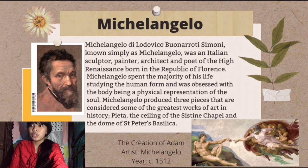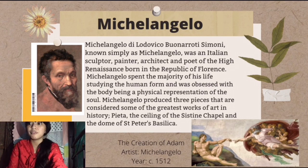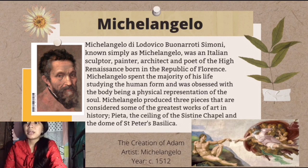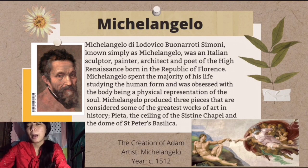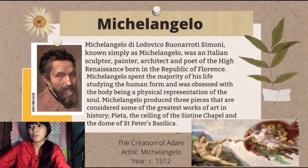Michelangelo's full name is Michelangelo di Lodovico Buonarroti Simoni. He was an Italian sculptor, painter, architect, and poet of the High Renaissance, born in the Republic of Florence. Michelangelo spent the majority of his life studying the human form and was obsessed with the body being a physical representation of the soul. Unlike Leonardo da Vinci, who was diverse and connected to many branches of science, Michelangelo was focused on sculpture, painting, architecture, and poetry.